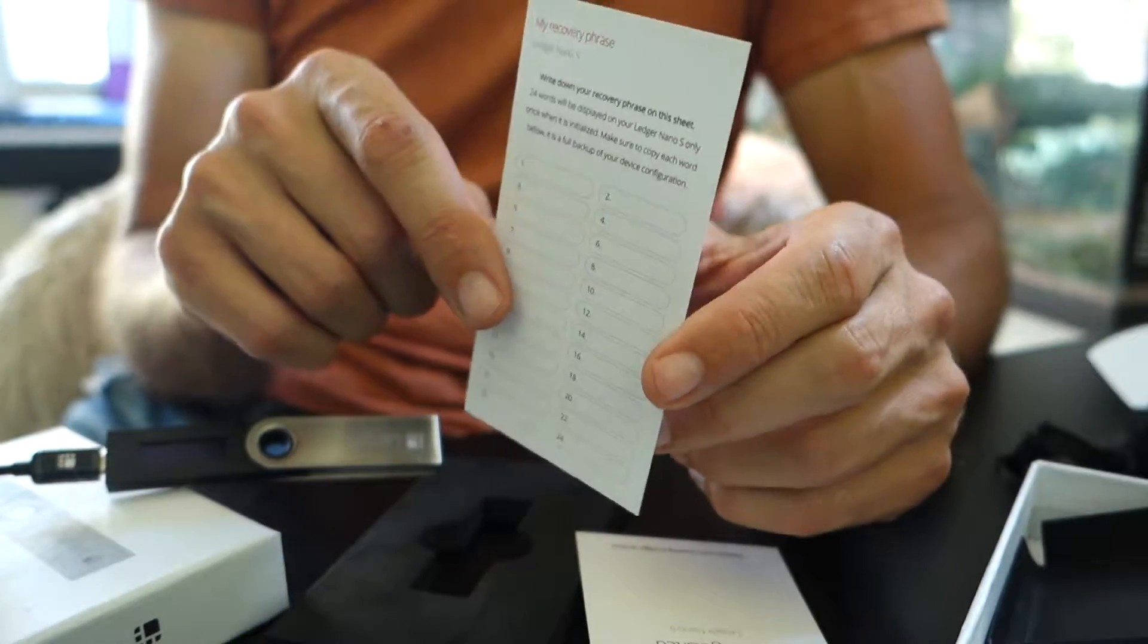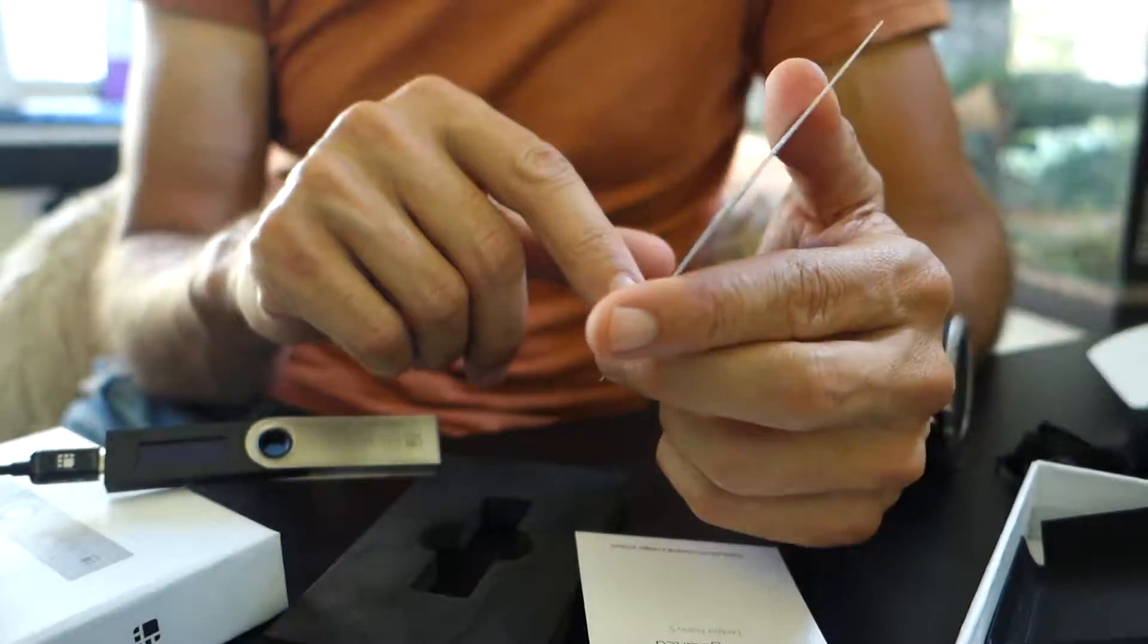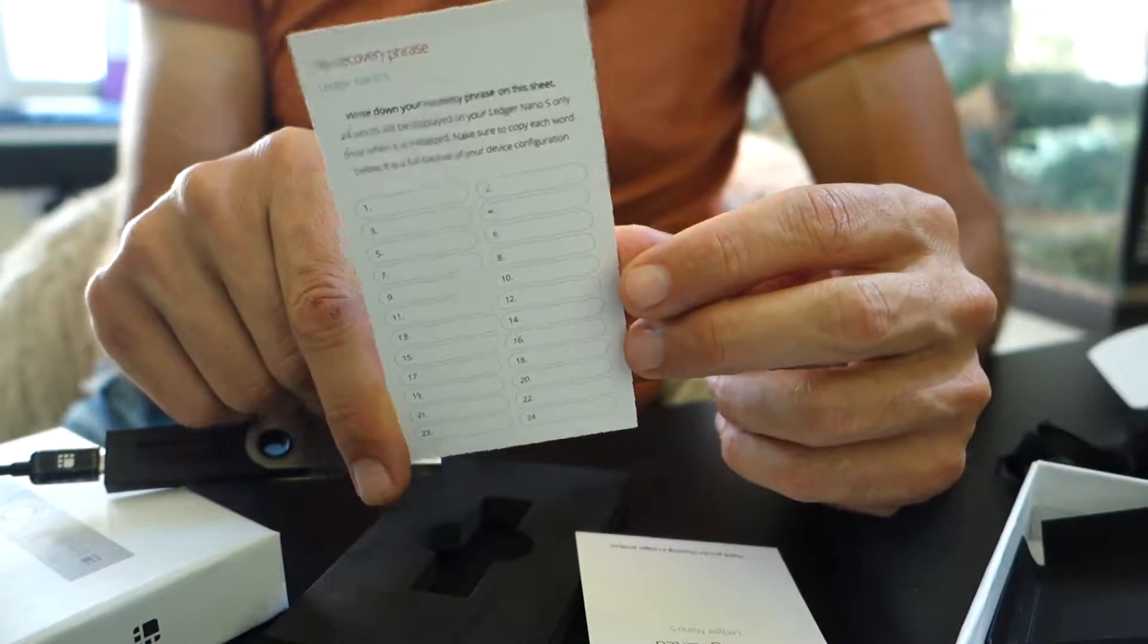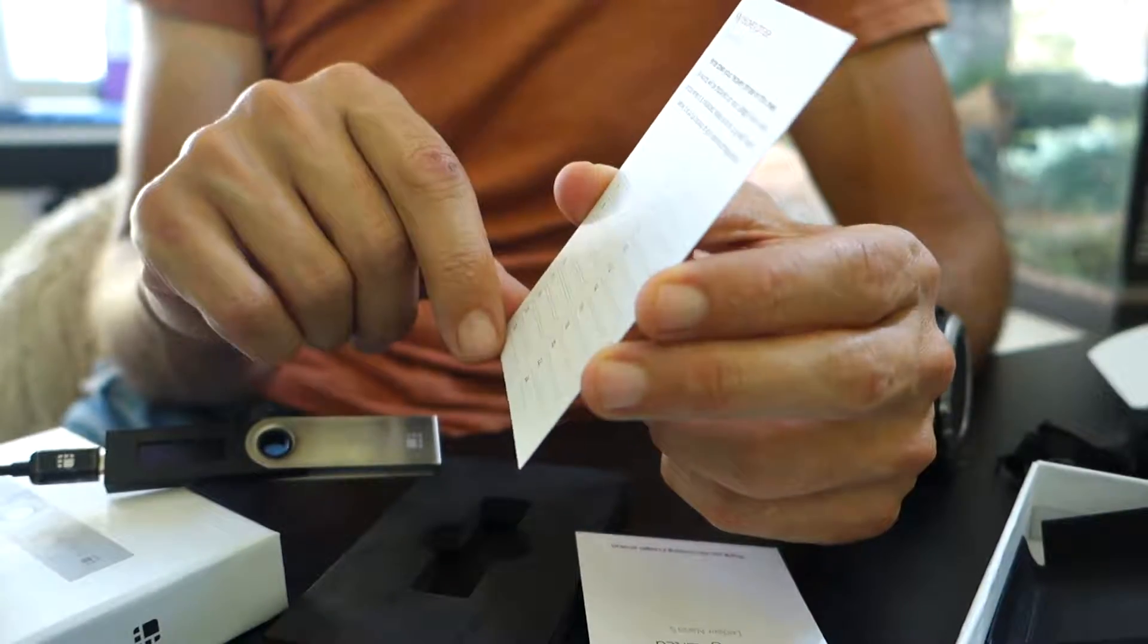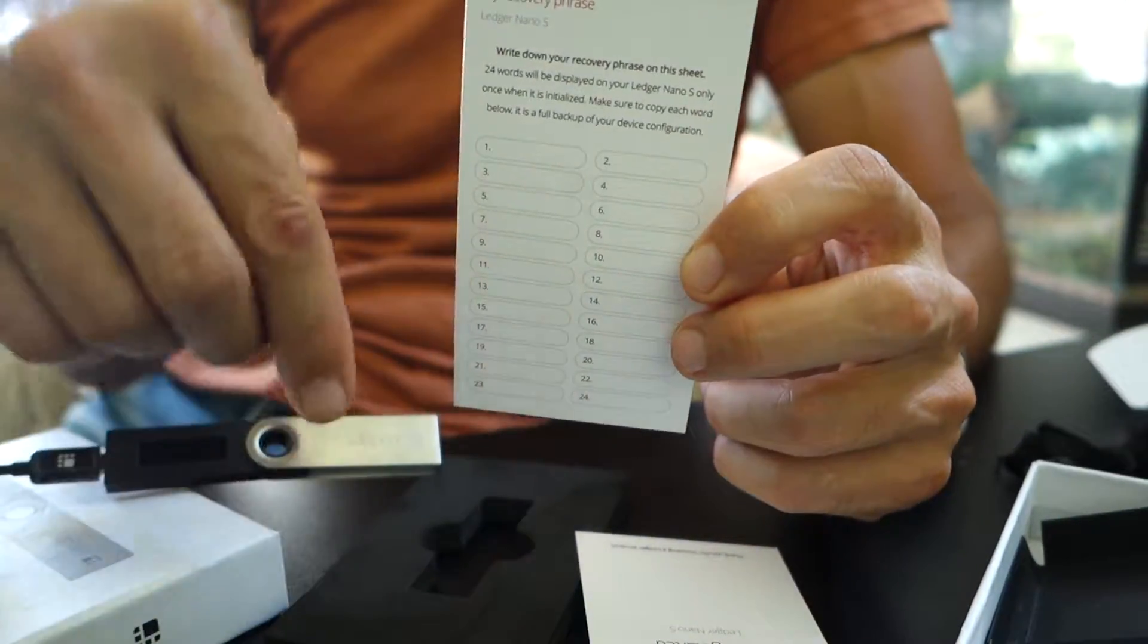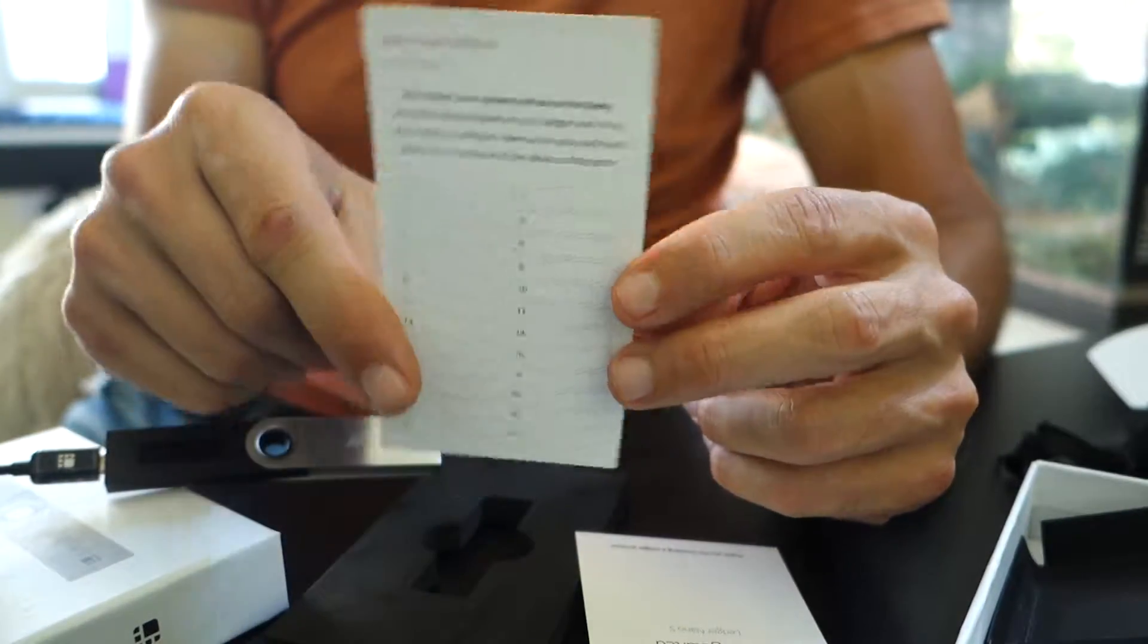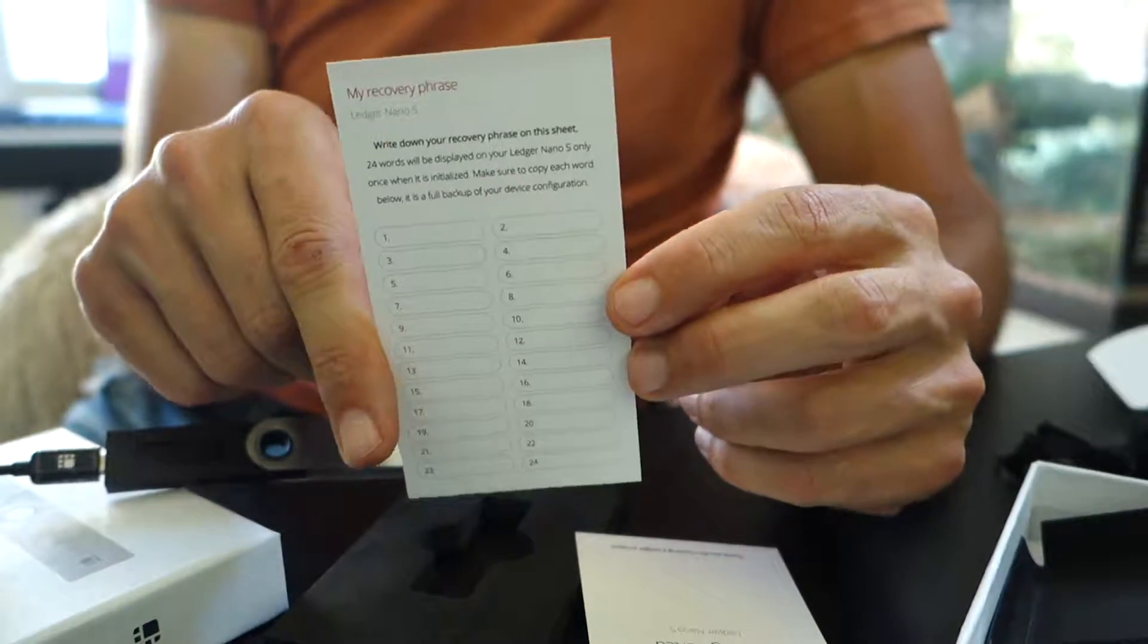So critical. Not something necessarily most people can remember, 24 words. But keeping this in a safe place is critical for getting the information off the device which, as I mentioned, can include actual currency and value.